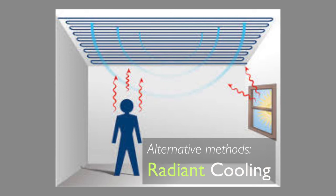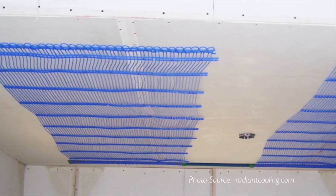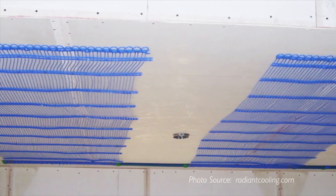Radiant cooling is used in human-occupied buildings where ceiling beams or walls are cooled in a way that is similar to in-floor heating.